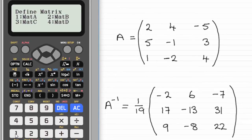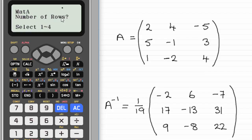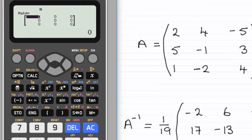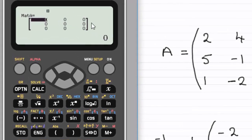We press 1 and it asks us for the number of rows. For this matrix we've got 3 rows, so we put 3 in. The number of columns is also 3, so we put in 3 columns and it presents us with matrix A.